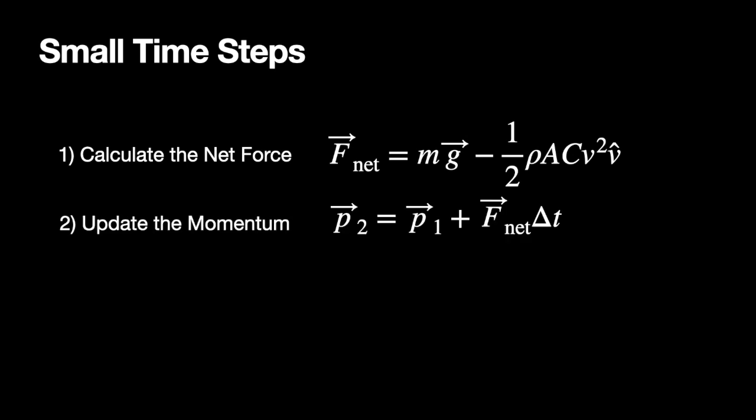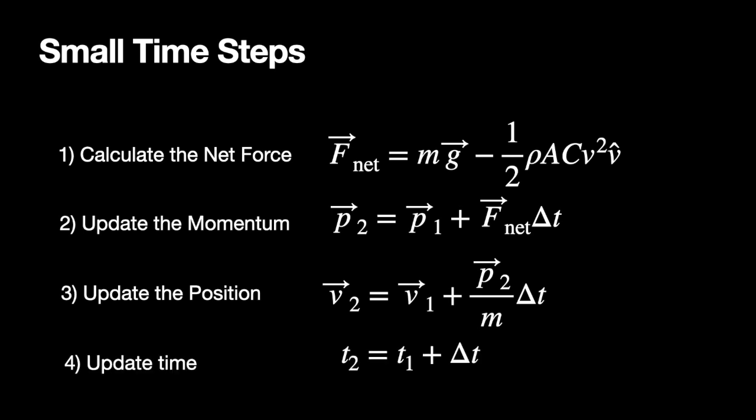Update the position. Now, I did have a typo here. Again, that should be R2 equals R1 plus P2 over M delta T. It's the same as before. Update time in each time step. And then I just keep doing this forever until I want to end. And we're going to do this right now. It's going to be awesome. So, let's switch over to Python. I'm going to write the code live. It's going to be awesome. And I'll see you guys there.